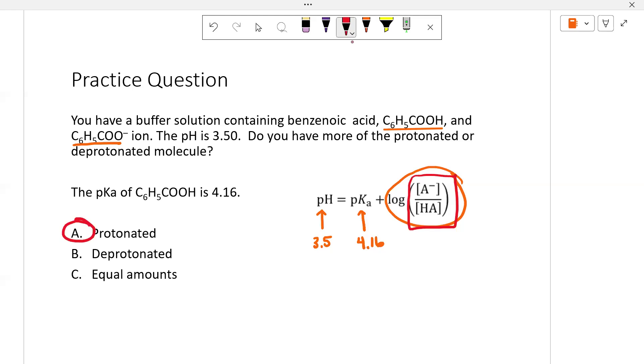That makes sense if you think about it for two reasons. The pH is less than the pKa, so you can remember this because lower pH, more acidic. So when the pH is less than the pKa, we have more of the acid. When the pH is more than the pKa, we have more of the base.